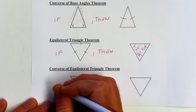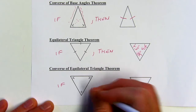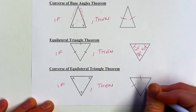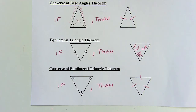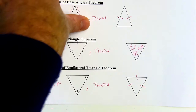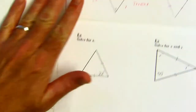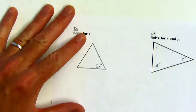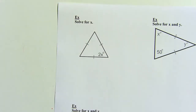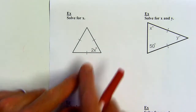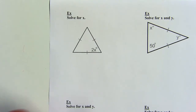The converse of this is also true — if you have an equiangular triangle, it will be equilateral. Now let's take a look at some examples of how we can use these theorems. Any problems in this section are going to involve either an equilateral triangle, an isosceles one, or sometimes both. Here we've got an equilateral triangle.